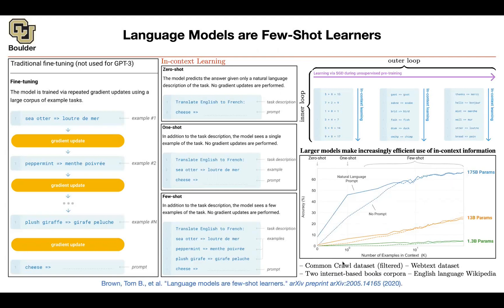The data they use is the Common Crawl dataset (filtered), the WebText dataset, two internet-based book corpora, and English-language Wikipedia. For pre-training they have a very large corpus - basically the entire internet. For fine-tuning, there is no fine-tuning. It's just going to be in-context learning - hard conditioning. You can use this model to solve different tasks.